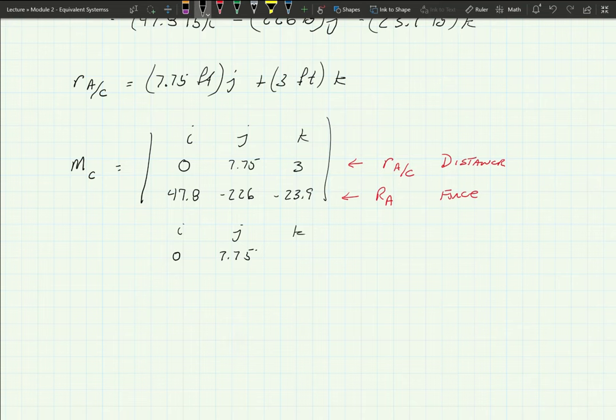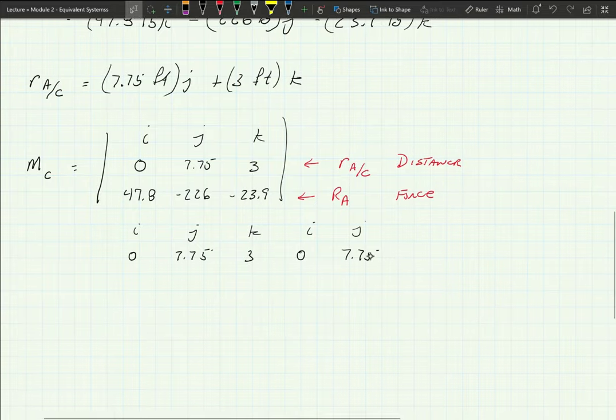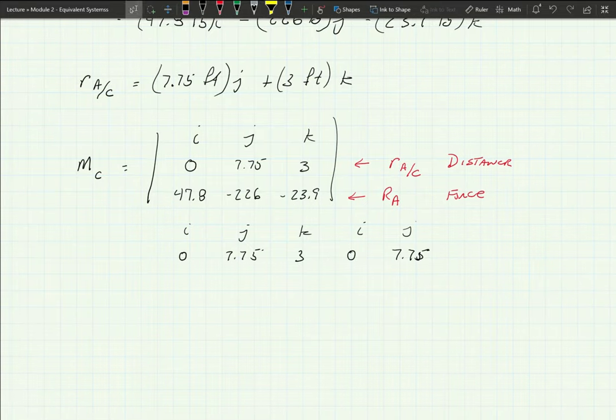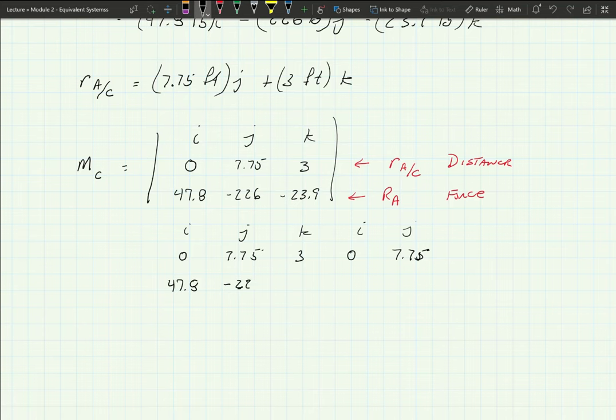Back to black. So we're going to set this problem up. I'm not going to do step-by-step with this, but let's do this. Just so I can have some peace of mind here that you know what you're doing. I, J, K, I, J. So that's zero, 7.75. It's probably time to charge it. So this may be the last video for today. Negative 226, negative 23.9, 47.8, and negative 226.